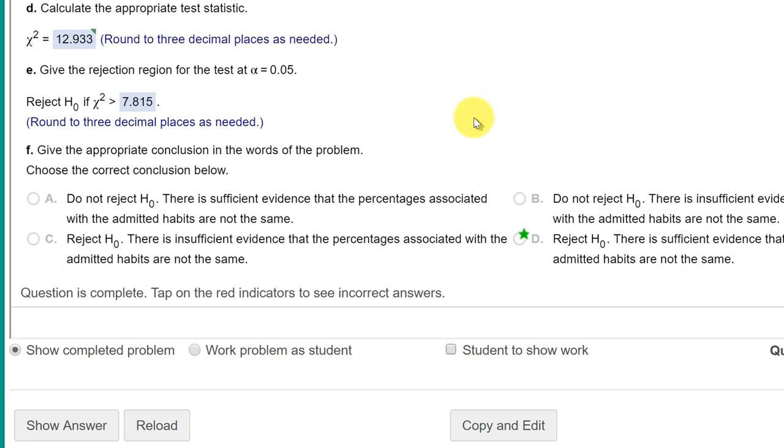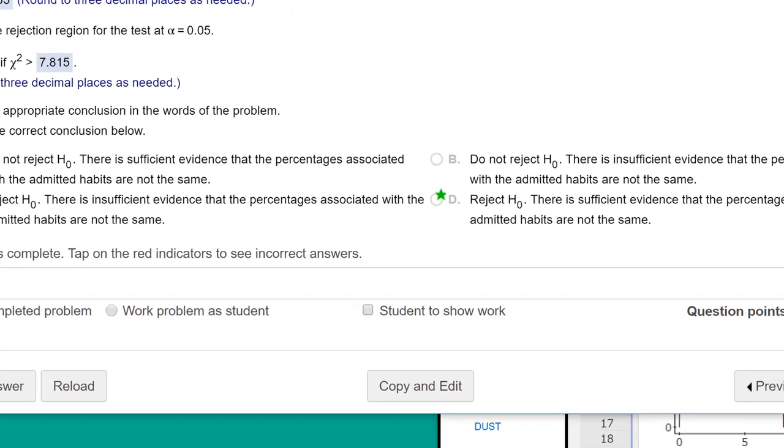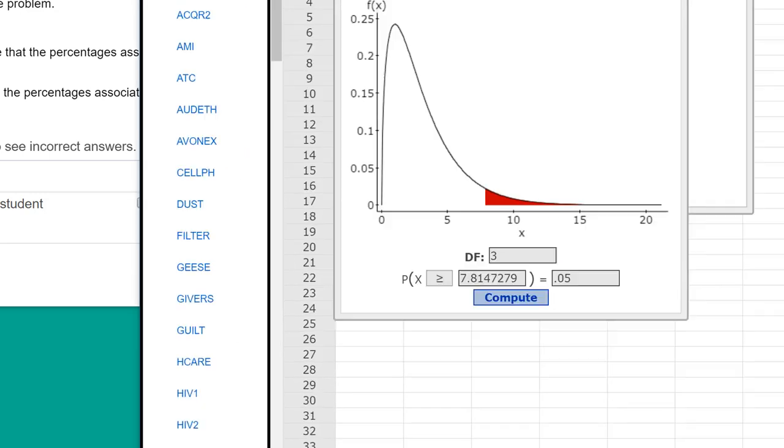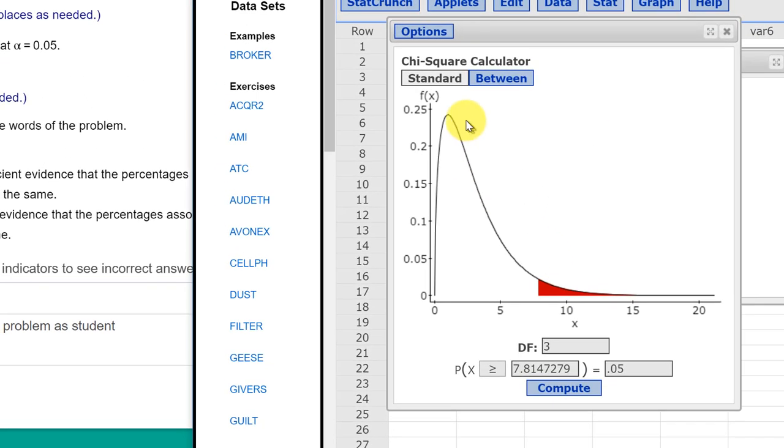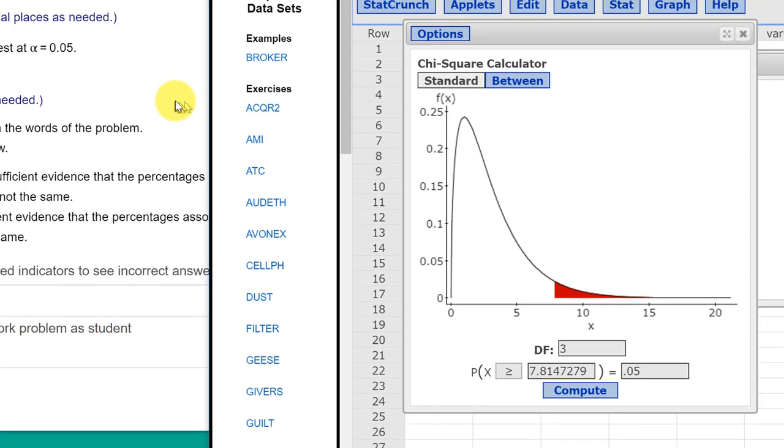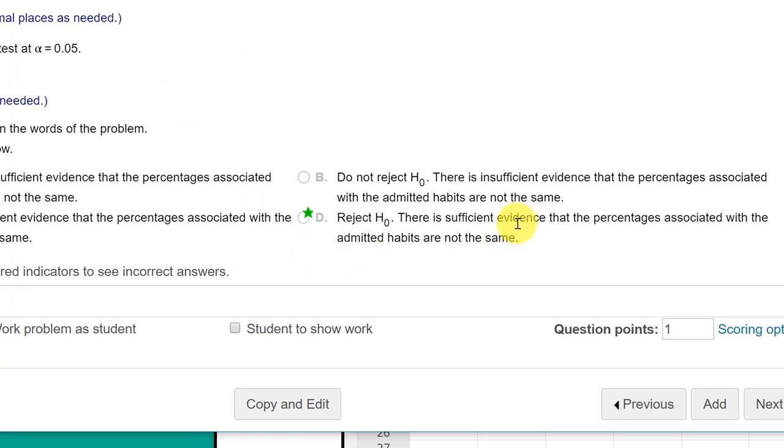Scrolling down, they want to give the appropriate conclusion. Well, because our test statistic, 12.913, is greater than our rejection value of 7.815, and we can see that here on the StatCrunch chart. There's our rejection region, and 12.933 is right there in the rejection region. And that tells us that we would reject the null. There is sufficient evidence that the percentages associated with the admitted habits are not equal.